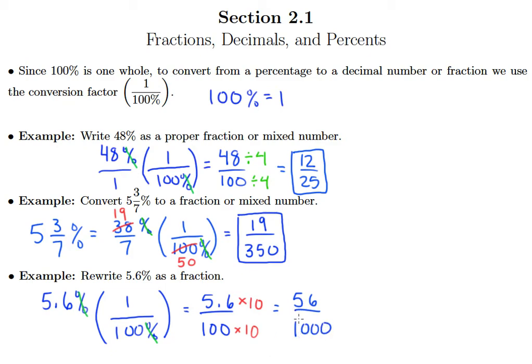Then I need to look for what 56 and 1,000 have in common. And let's see, 56 is divisible by 8. So 56 divided by 8 is 7, and 1,000 divided by 8 is 125. So 5.6% is equivalent to 7/125.